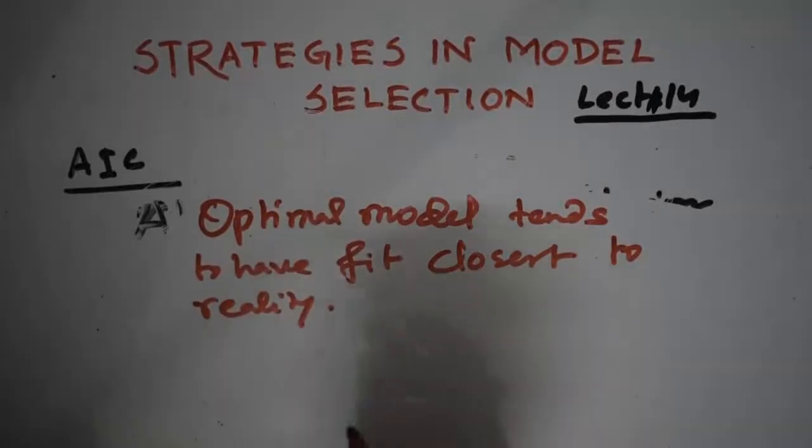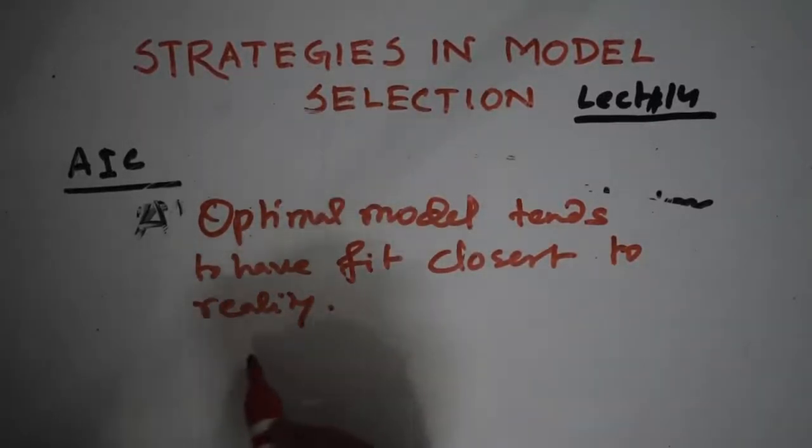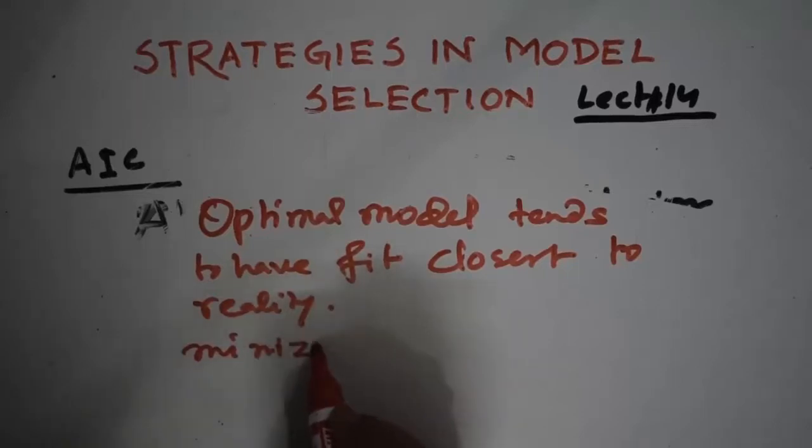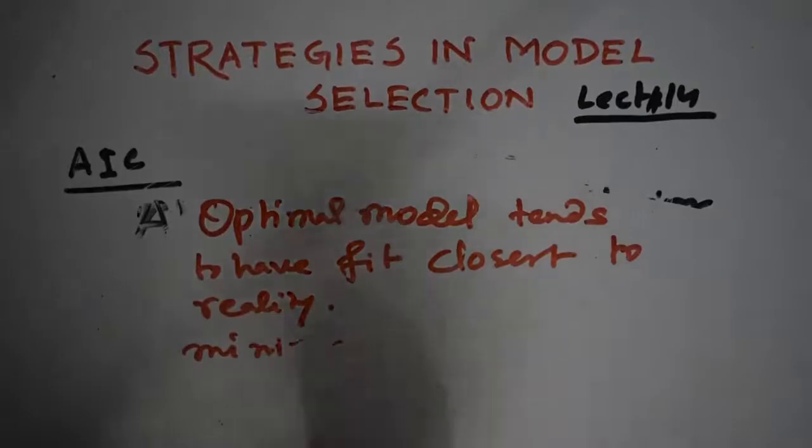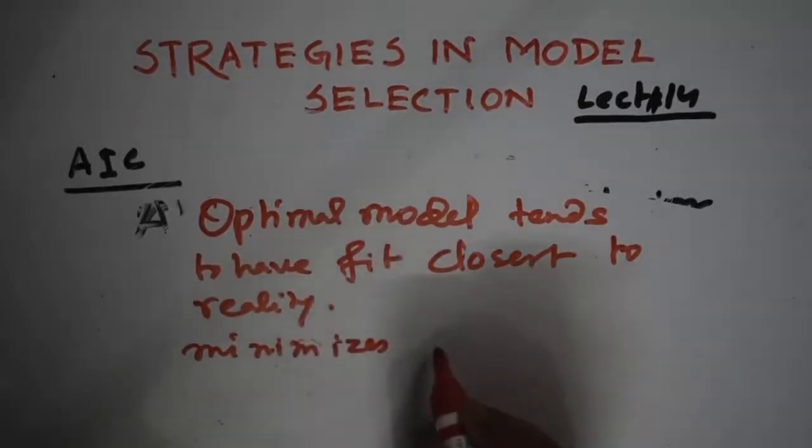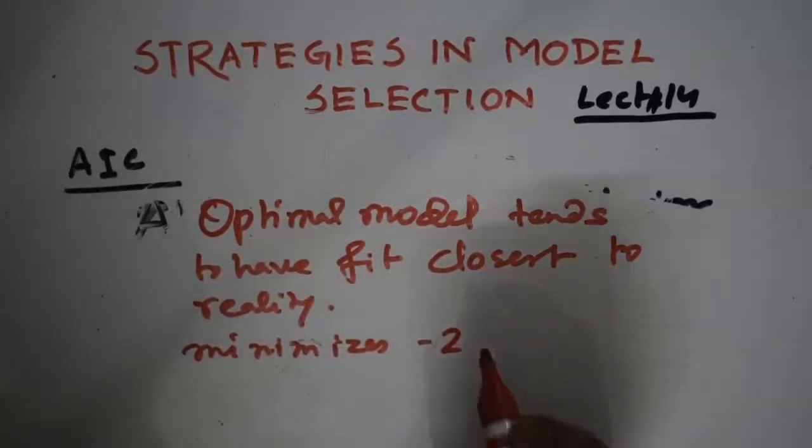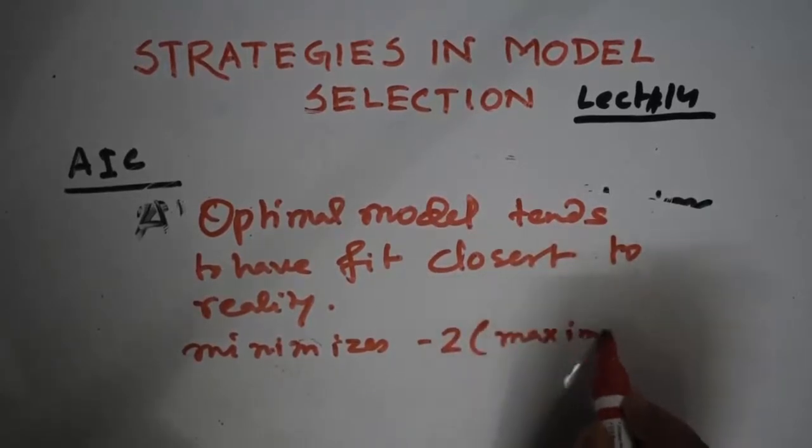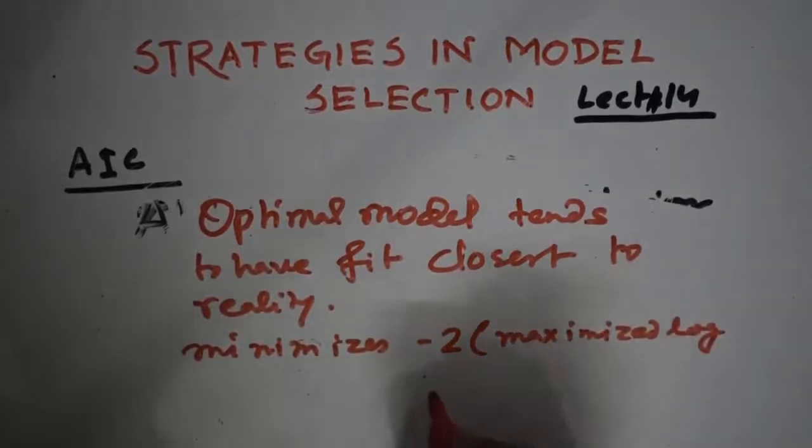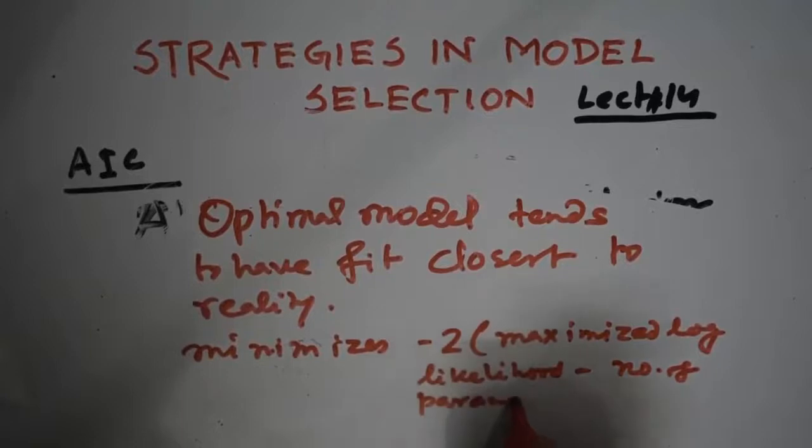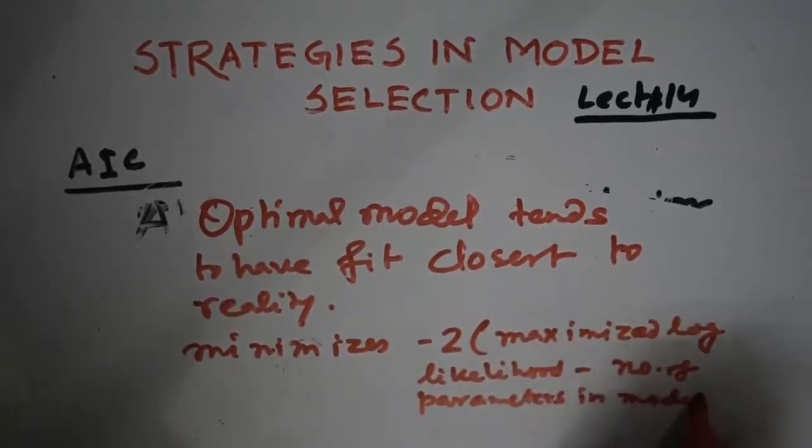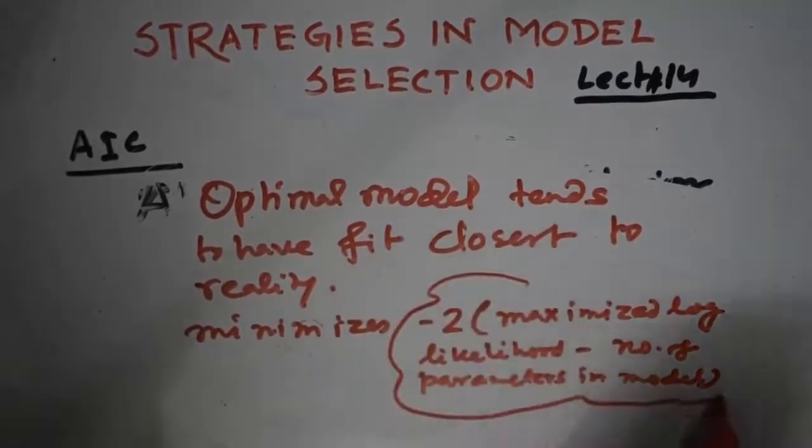Akaike showed that this criterion selects the model that minimizes minus 2 times maximized log likelihood minus number of parameters in model. This term is AIC.